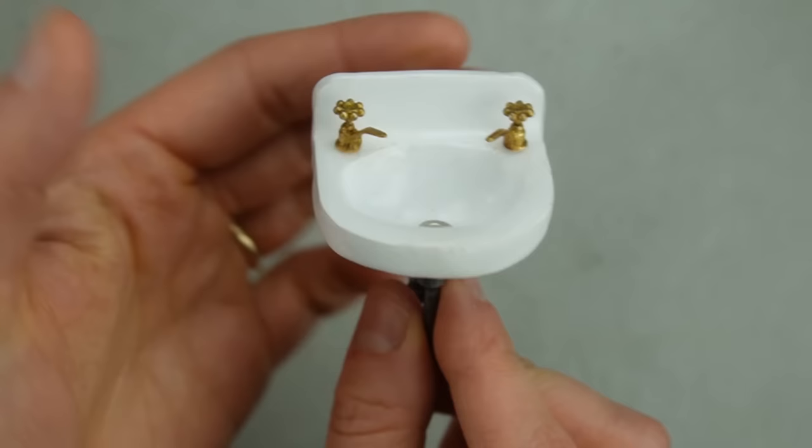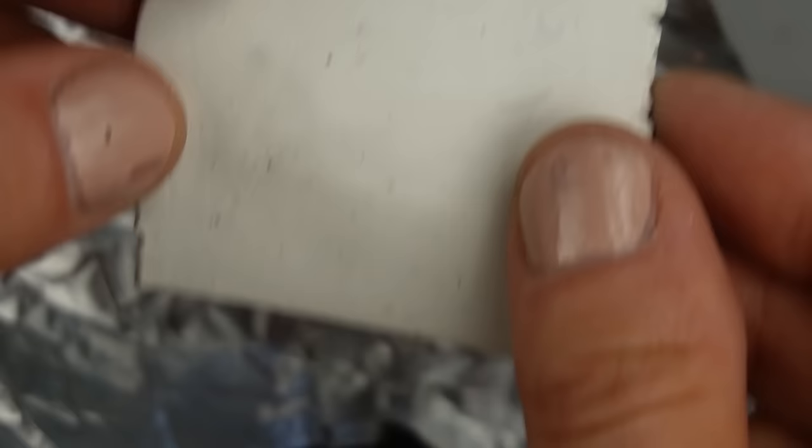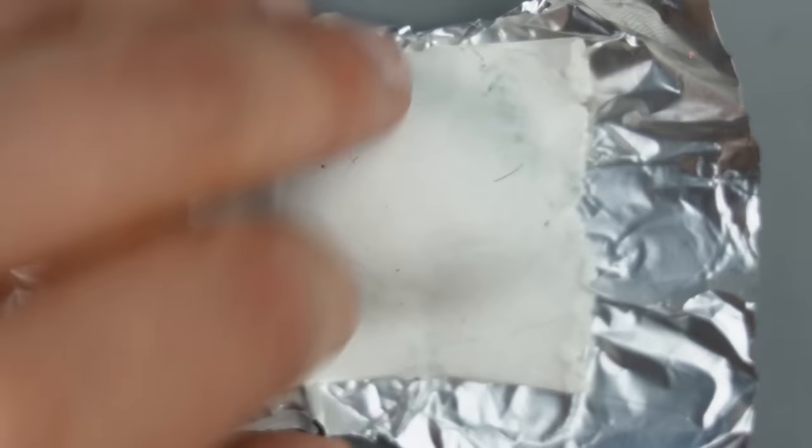I shaped some scrap clay into a dome for the inside of the sink. I'm using aluminum foil as a barrier between the two pieces of clay. I trimmed the excess before baking.